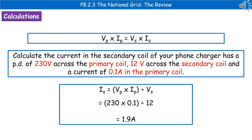Next, we're working out the current in the secondary coil, so we rearrange the equation to make that the subject: current in the secondary coil equals the voltage in the primary times the current in the primary, divided by the voltage in the secondary coil. Substituting in the values — 230 times 0.1 divided by 12 — gives us an answer of 1.9 amps.